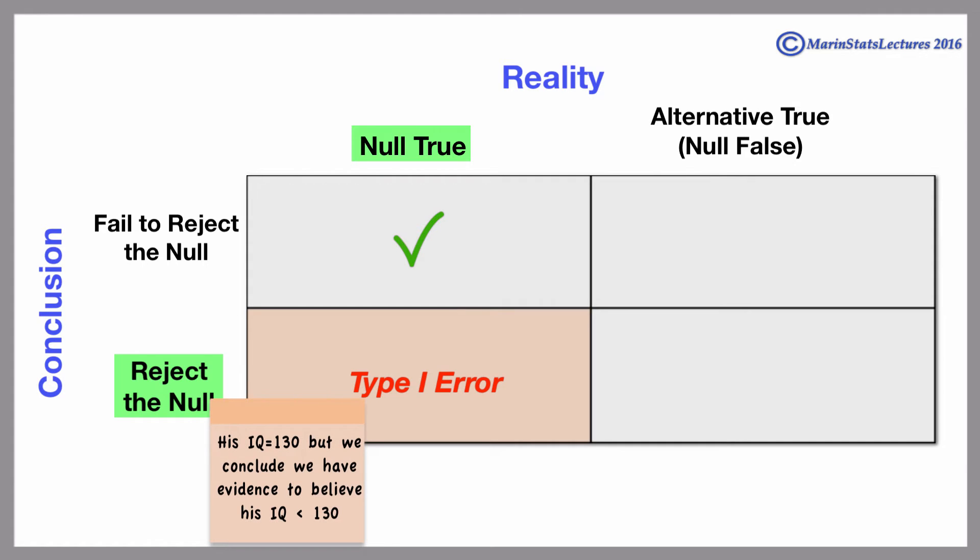This would be if Kian's IQ really is 130, but we conclude that we have evidence to believe his IQ is less than 130. A type 1 error is when we reject the null when in fact the null is true.